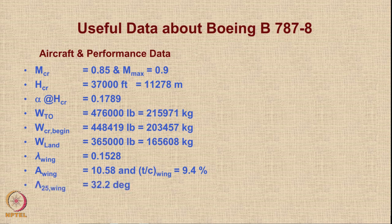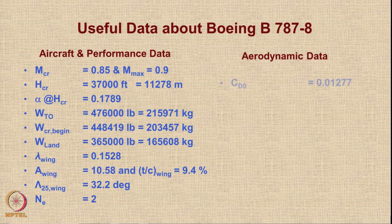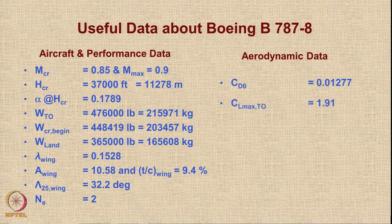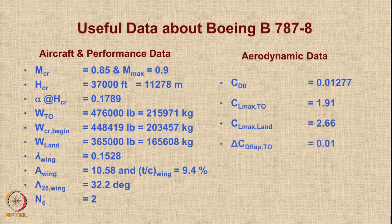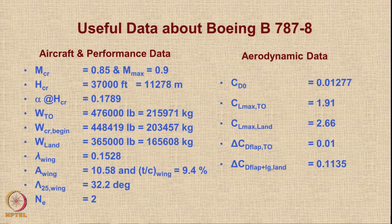The quarter-chord sweep of the aircraft is 32.2 degrees and it has 2 engines. Now looking at aerodynamic data: the zero-lift drag coefficient in cruising flight is 0.01277, which can be assumed the same in all phases of flight at non-extreme Mach numbers. The CL max at takeoff is 1.91 with flaps deflected, and CL max at landing is 2.66. The additional drag due to flap deflection at takeoff is 0.01, and the additional drag due to flaps plus landing gear at landing is 0.1135.